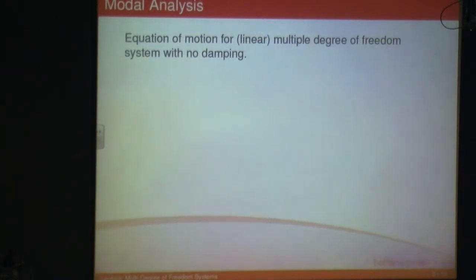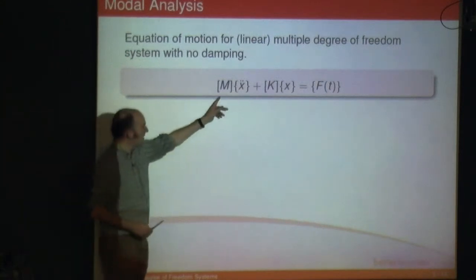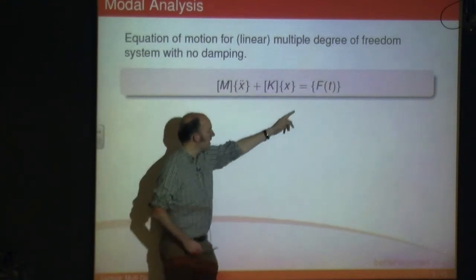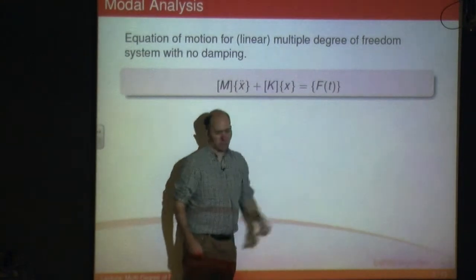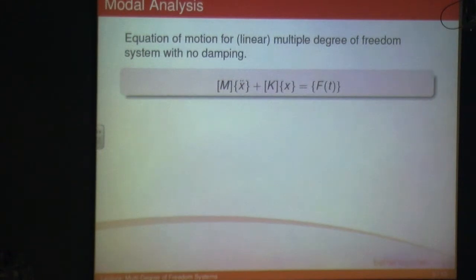Before we start on modal analysis, the equation of motion for a linear multiple degrees of freedom system with no damping follows this form. This is the mass matrix, we've got acceleration, stiffness matrix, displacement, and then there's your forcing function. That was covered in chapter 5 — this is in matrix form with multiple degrees of freedom. If the system is linear, it will always follow that format.